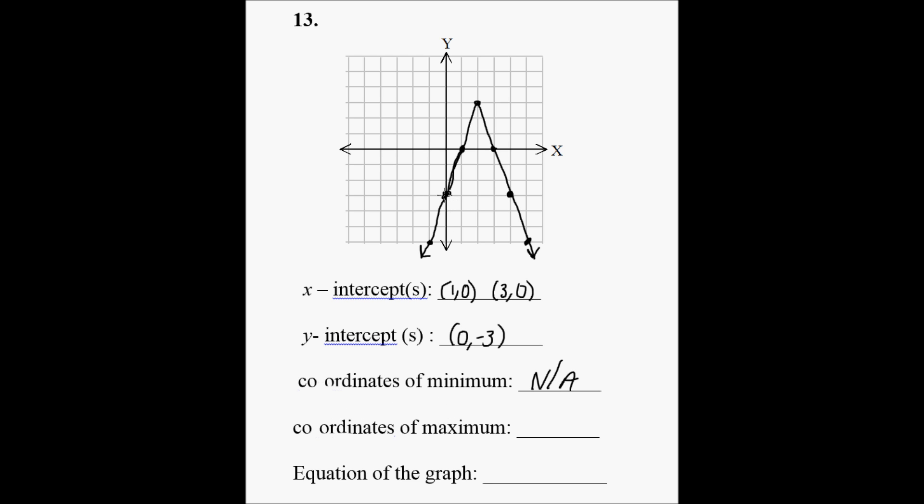Coordinates of the maximum. There is a maximum. The highest point of the graph is this vertex, so the coordinates of the vertex is (2, 3), and that's the coordinates of where the maximum is located.